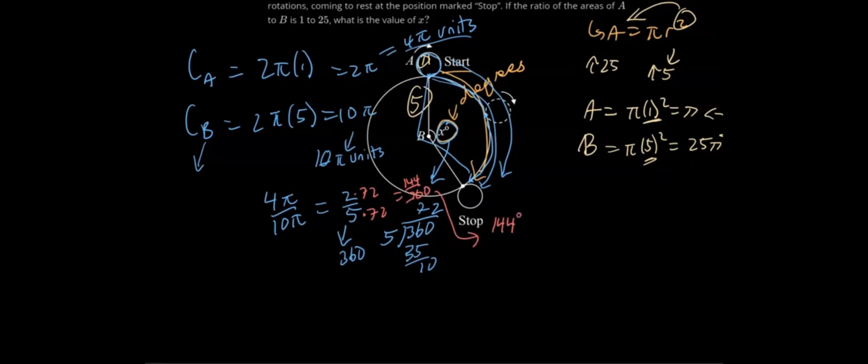So let's put this in degrees. This is 144 degrees of 360 degrees, which is our full circle. Therefore, x is equal to 144 degrees.